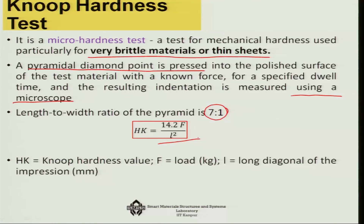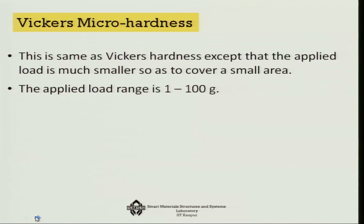The load used in Knoop hardness testing is substantially smaller compared to macro hardness tests. Similarly, the Vickers micro hardness test also uses a load range as small as 1 to 100 grams — that is the kind of load involved when talking about micro hardness tests.